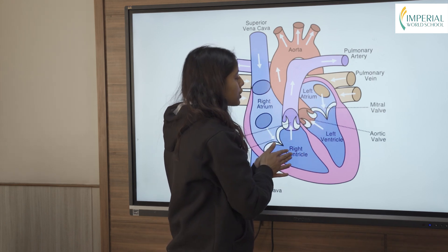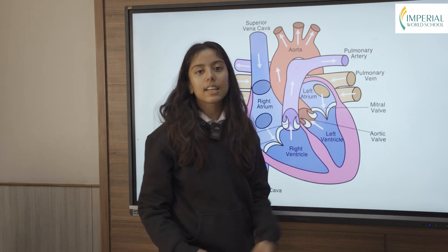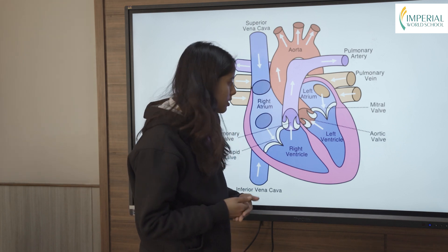When the left auricle contracts, the blood pours down to the left ventricle through the bicuspid valve. It's called a bicuspid valve because there are two flaps of muscles.